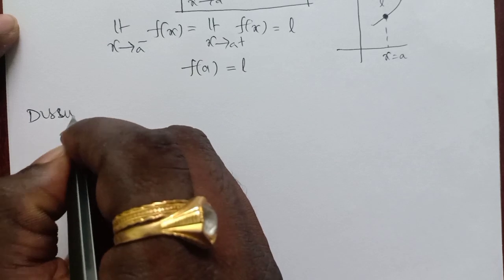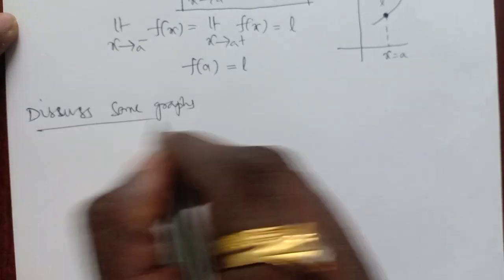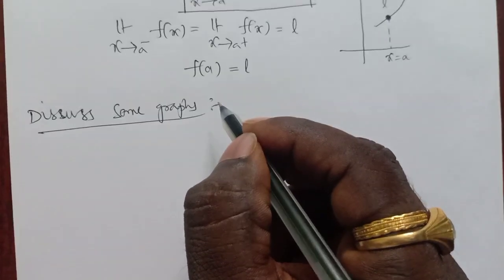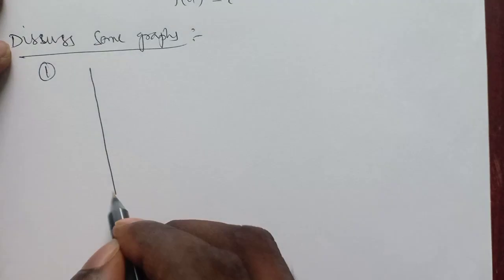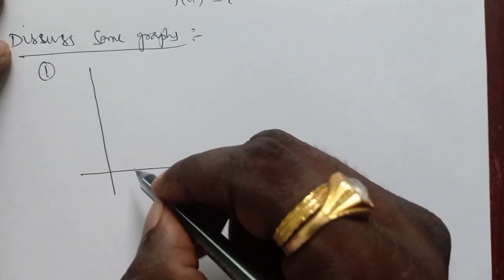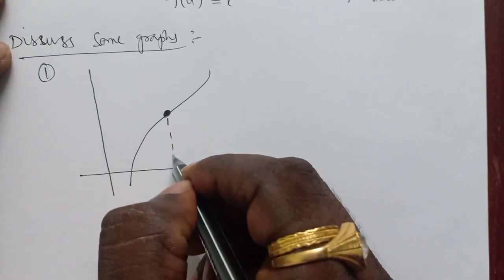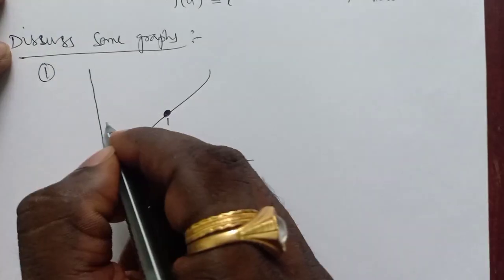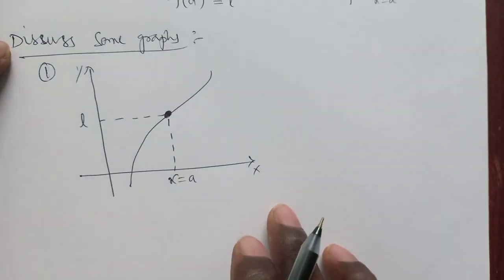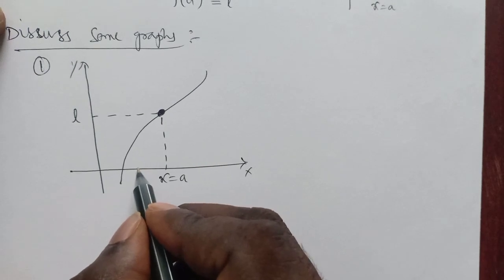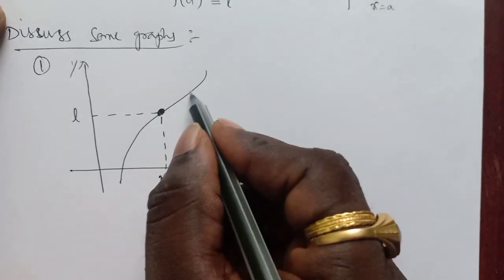Let us discuss some graphs. In the first graph, x equals a and the value is l. As x approaches a from the left side or from the right side, the graph approaches l.